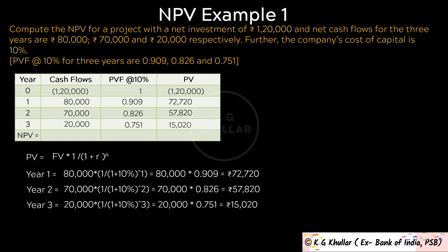To find the net present value, simply add all these present values: negative 1,20,000 plus 72,720 plus 57,820 plus 15,020 equals Rs. 25,560.